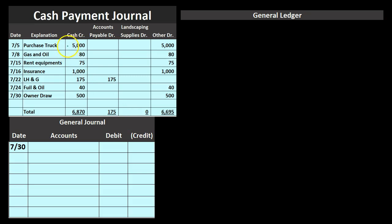Rather than recording each item as a separate debit and credit to the general journal, we wait until end of month and break everything out together. We start with cash going down — a credit of $6,870 — which is unusual to list first, but helpful in a manual system since it's the first account on our cash payment journal. The next component is accounts payable, which gets debited for $175, bringing that liability account down.